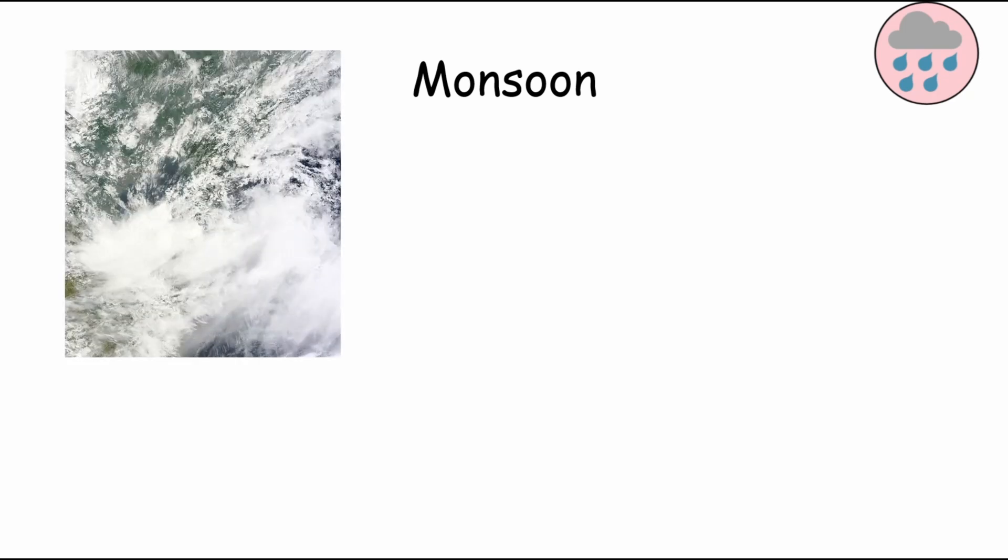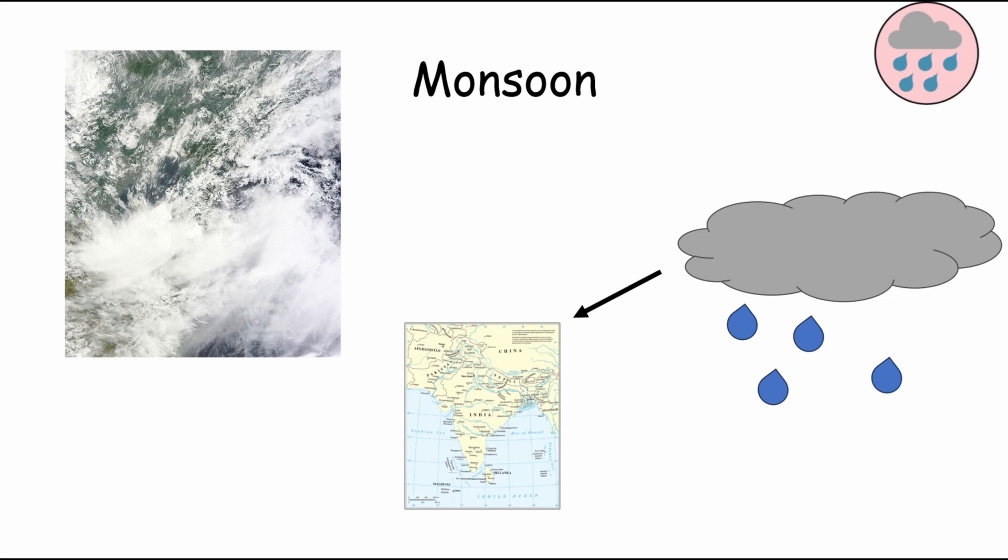A monsoon is a seasonal wind pattern characterized by a shift in prevailing winds that brings a distinct change to weather conditions, particularly heavy rainfall, to certain regions. Monsoons are most commonly associated with the Indian subcontinent, where they occur due to the differential heating between land masses and oceans. During the summer months, warm, moist air from the Indian Ocean is drawn inland, leading to widespread rainfall across the region. This seasonal precipitation is vital for agriculture and replenishing water sources, but monsoon rains can also cause flooding and landslides.